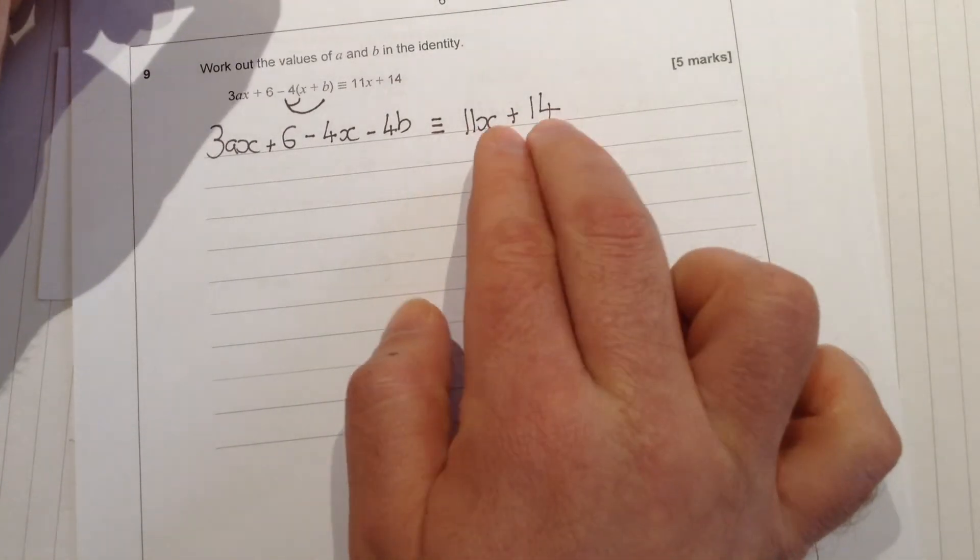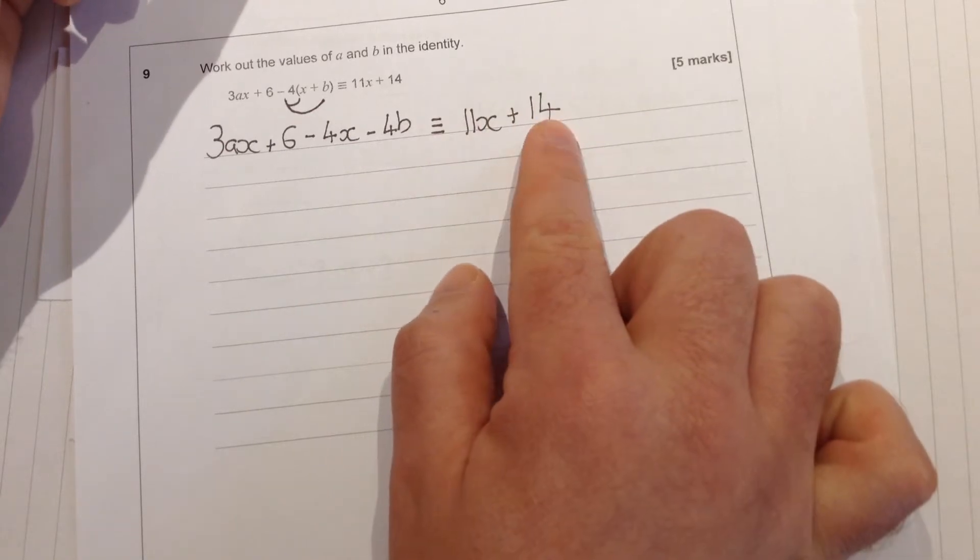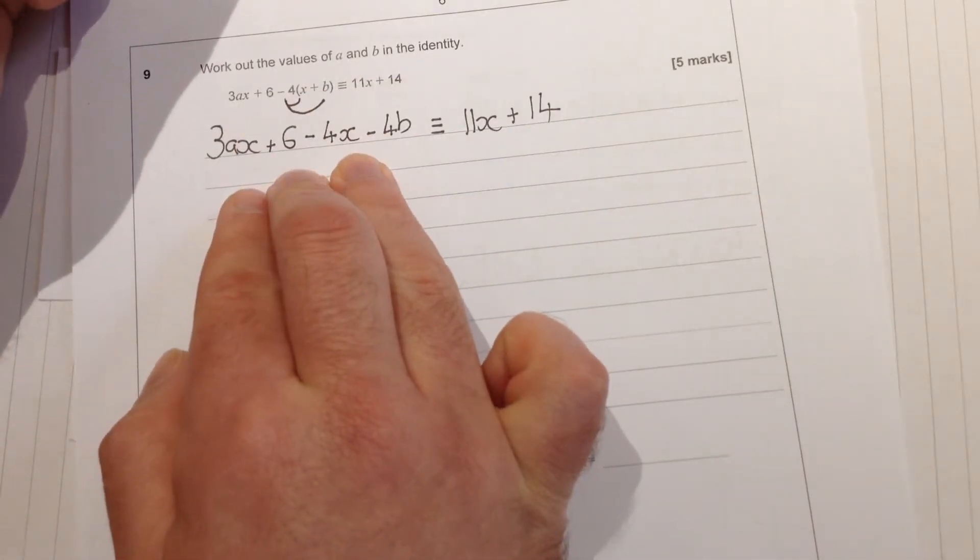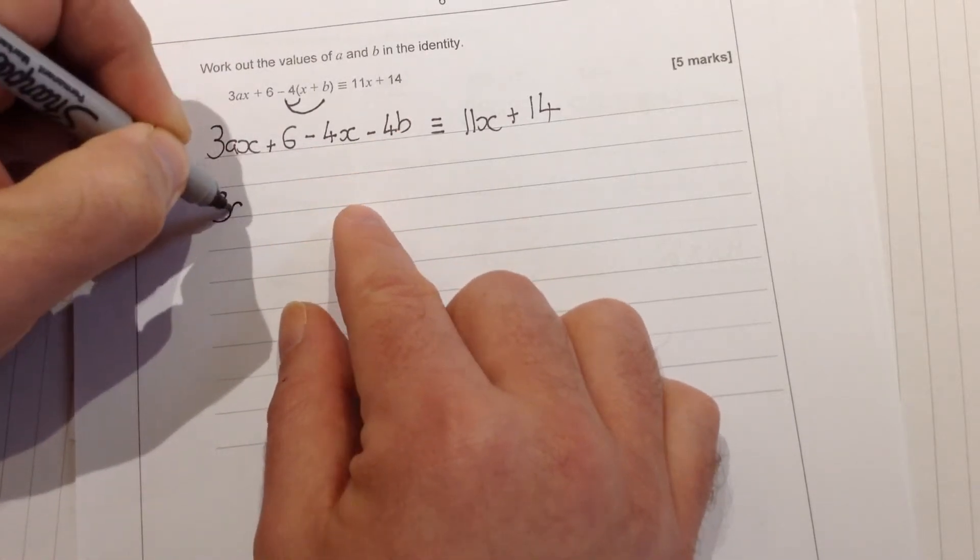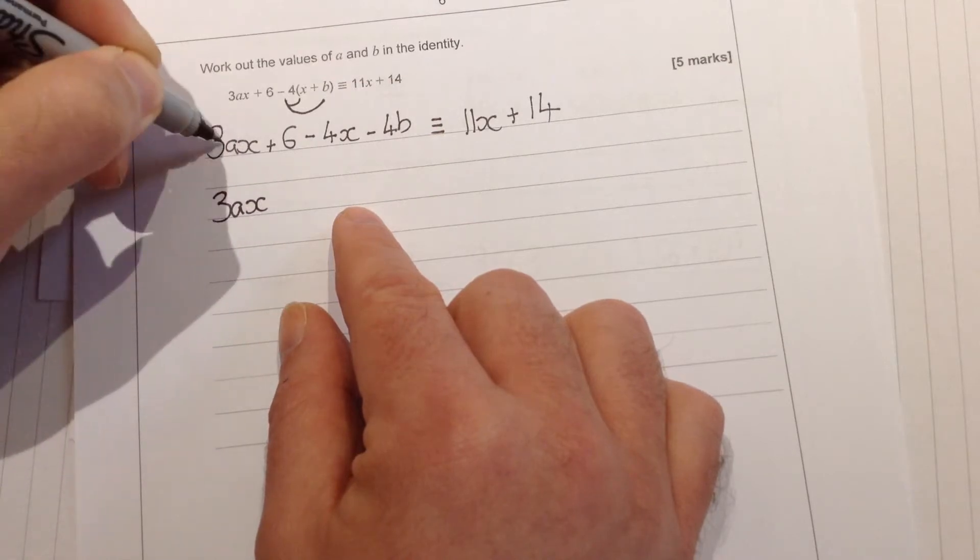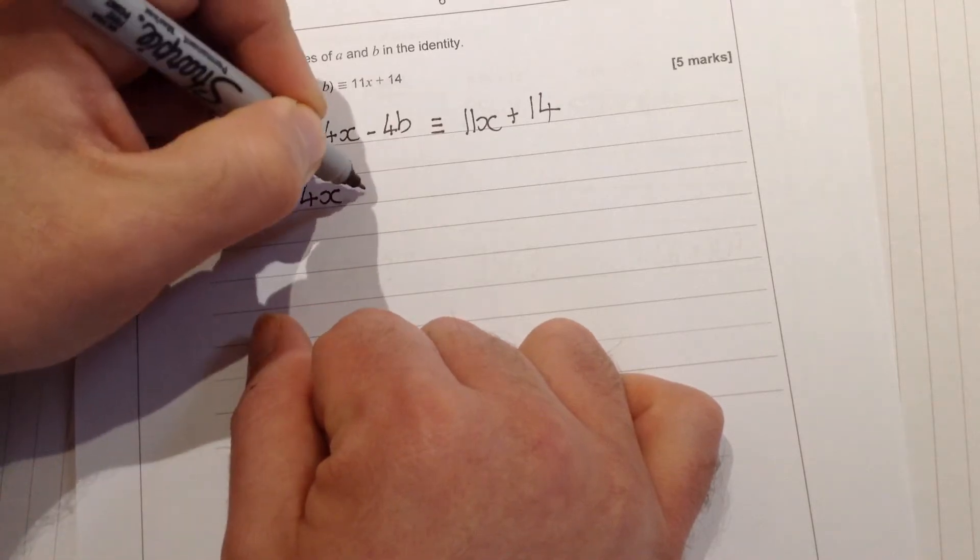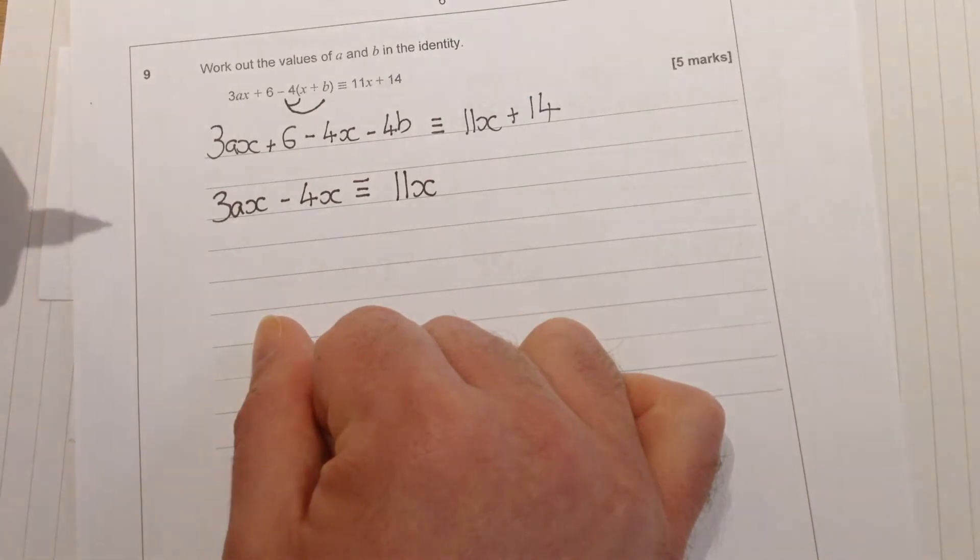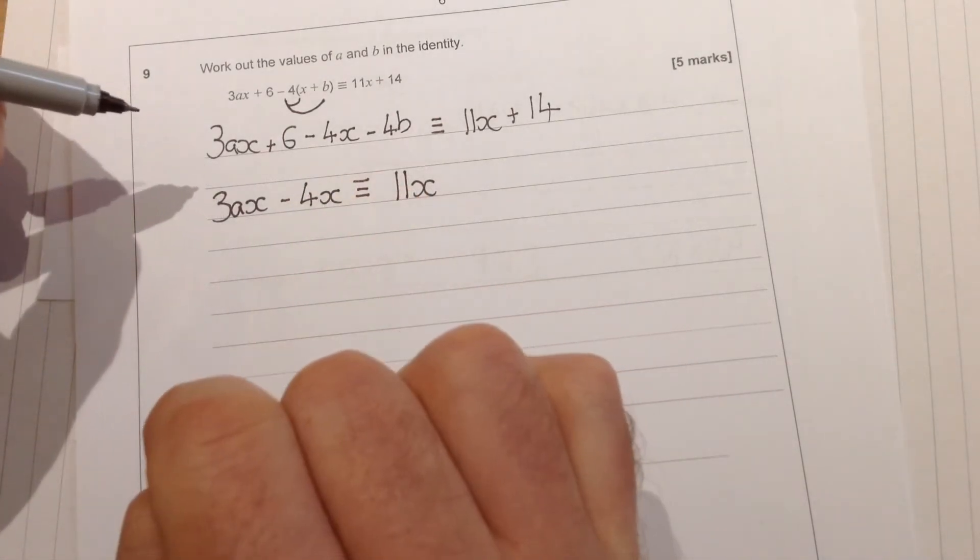So because we've got two parts, two terms here on the right hand side, something with an x on and some numbers on their own, I'm going to do the same with the stuff on the left hand side here. So if I collect together all the stuff that has got anything to do with x, so the 3ax and then this minus 4x, I want that to be exactly the same as 11x.